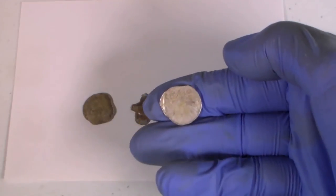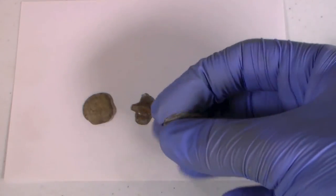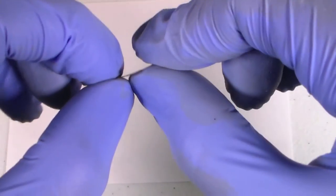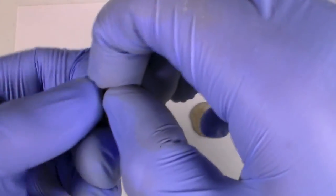You can see that the acid rendered the nickels completely unrecognizable. At this point, they really just look like lumps of metal. One of them is actually so thin that I can bend it with just my fingers.